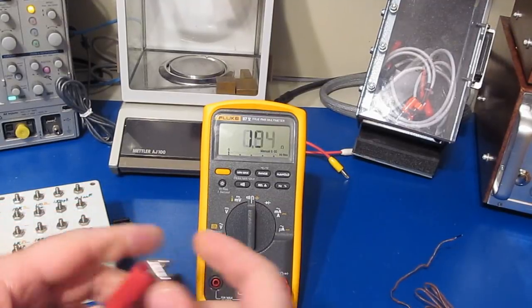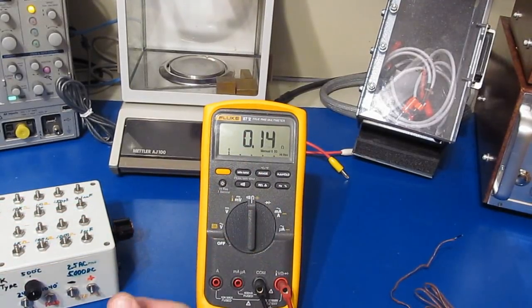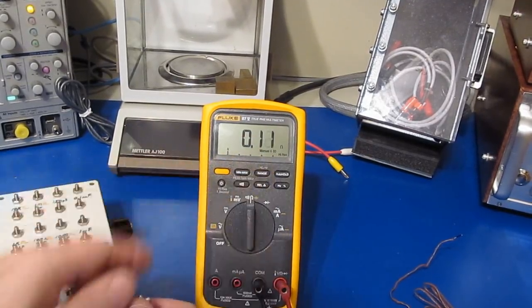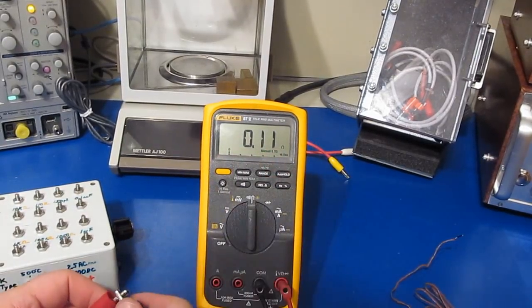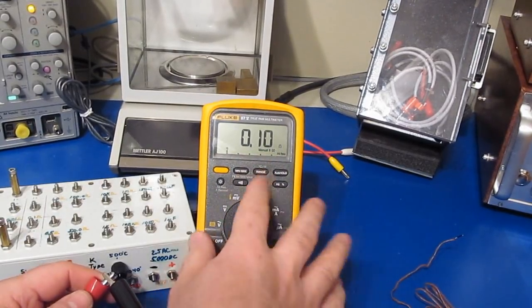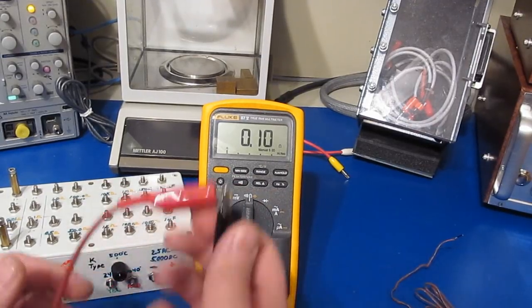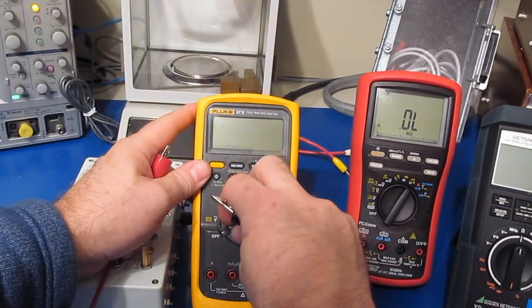So if we go ahead and short this out, there you go, sure enough. It can actually display point zero one ohm resolution. That's a good little trick to know about this meter. Let's just turn this off.